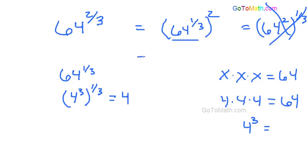So this here gets replaced with a 4 and then of course we got the 2 up top. And 4 times 4 is 16. So there you go. 16. 64 raised to the 2 thirds is 16.